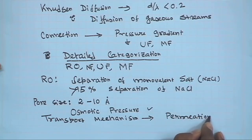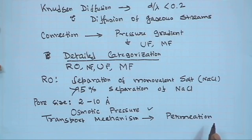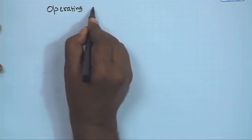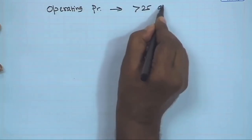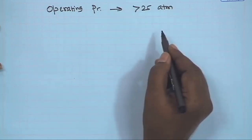The transport mechanism in reverse osmosis is permeation — dissolution, diffusion, and desorption — because we are dealing with a very small pore size. The reverse osmosis membrane is also called almost a non-porous membrane. The throughput depends on the operating pressure range. Typical operating pressure will be above 25 atmospheres; most desalination plants operate around 50 to 60 atmospheres to overcome the osmotic pressure of the solution. The effective driving force is the operating pressure minus the osmotic pressure — the greater this difference, the higher the throughput.